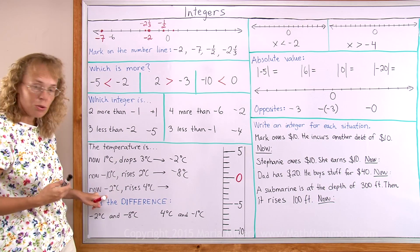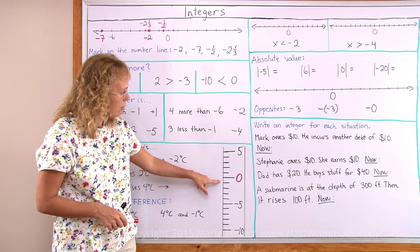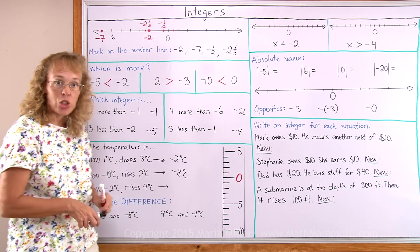Now it is minus 2 degrees Celsius and rises 4. Minus 2 is here. Rising 4 degrees puts it at 2 degrees.